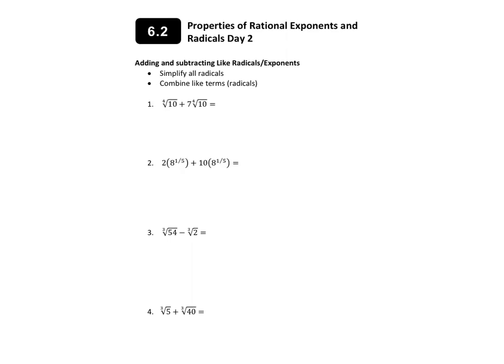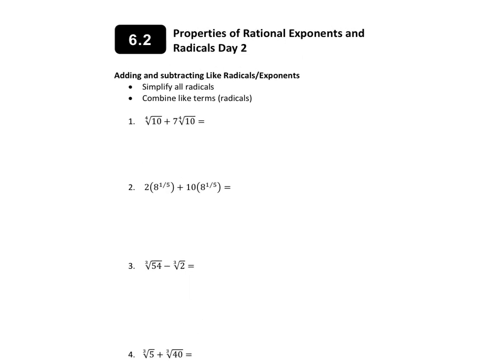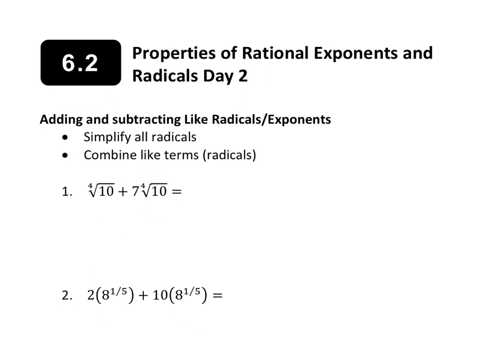The bottom line rule of adding and subtracting radicals is that you have to have like terms. All day today we're going to be doing CLT — combining like terms — which is what we've been doing with like variables and exponents, but this time with radicals. That means the radicals have to have the same index, the little number, and radicand, the thing underneath the square root.